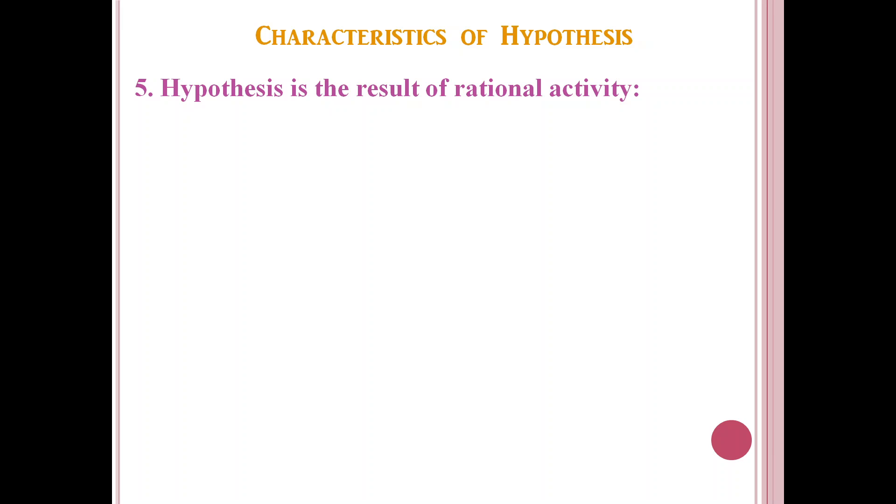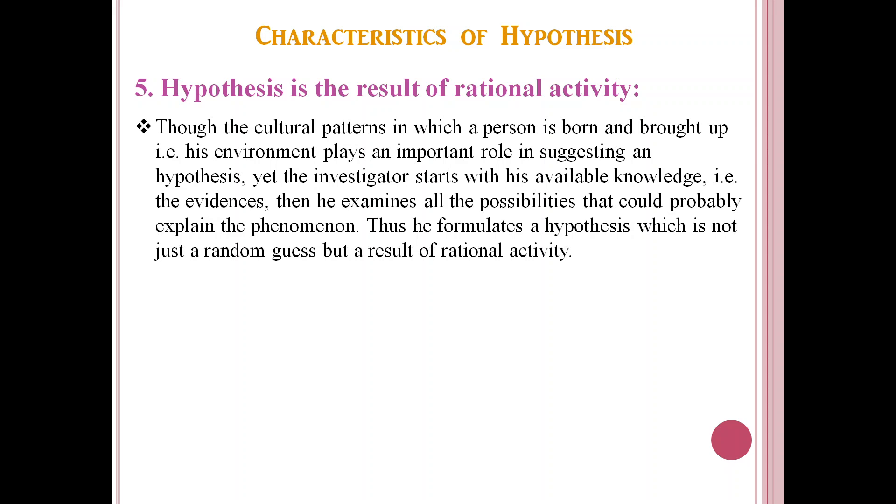Now, we come to the fifth. Hypothesis is the result of rational activity. Though the cultural patterns in which a person is born and brought up, that is his environment, plays an important role in suggesting a hypothesis, yet the investigator starts with his available knowledge, that is the evidences that he has at hand. Then he will examine all the possibilities that could probably explain the phenomenon. Thus, he will formulate a hypothesis which is not just a random guess, but a result of rational activity. Rational activity means he will think over the knowledge what he has and he will relate that knowledge to the problem. So, lot of reasoning is involved in his thinking.